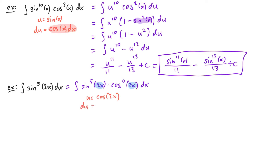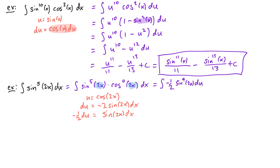Taking the derivative we get du is equal to negative 2 sine of 2x dx — here we have to use the chain rule when taking the derivative of cosine of 2x. Dividing both sides by negative 2 we have negative one half du is equal to sine of 2x dx. One copy of sine of 2x dx will be replaced with negative one half du, but we still have sine of 2x to the fourth power remaining. We're going to use our trig identity to rewrite sine of 2x in terms of cosine of 2x. We can think about this as the integral of negative one half times sine squared of 2x squared du.